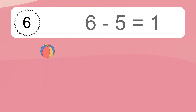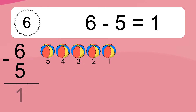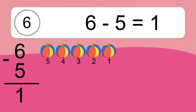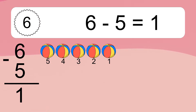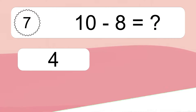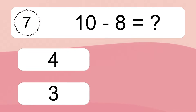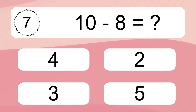6 minus 5 equals what? 6 minus 5 equals 1. Let's count it: 5, 4, 3, 2, 1.